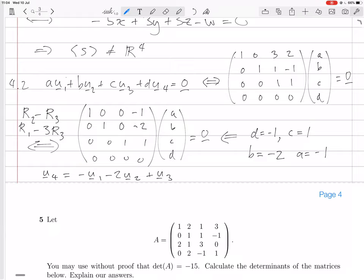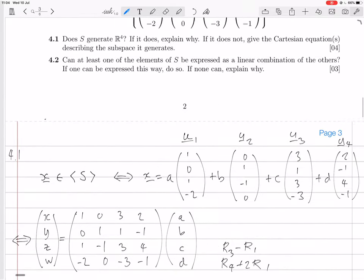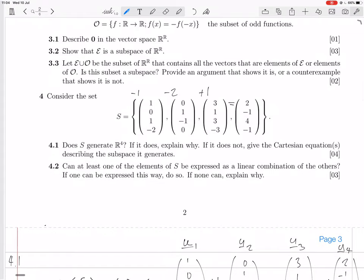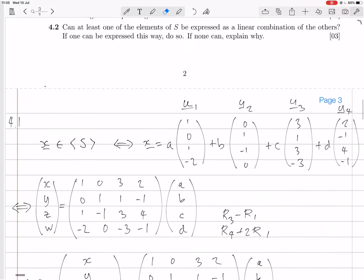So you've expressed u4 in terms of the other vectors, let's just check that that's correct. So the coefficients were minus 1, minus 2, and 1. We did minus 1 times this, minus 2 times that, plus 1 times that, should equal that. So you get, top row you get minus 1 plus 3, that's 2, yes. Next row you get minus 2 plus 1, that's minus 1, yes. Next row you get minus 1 plus 2 plus 3, that's 4, yes. Next row you get 2 minus 3, that's minus 1, yes. So our linear combination is correct. And I think that's the end of the question.